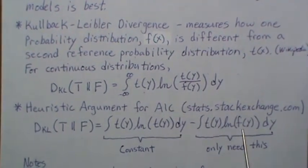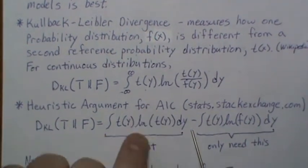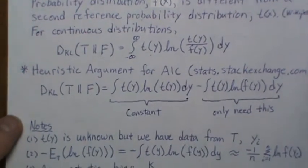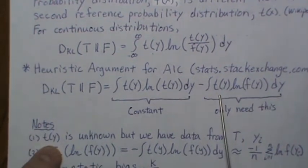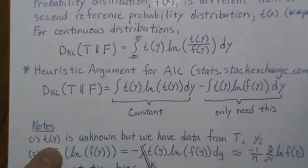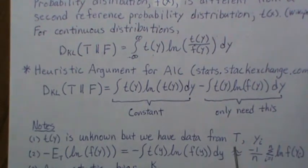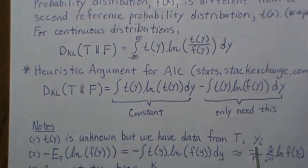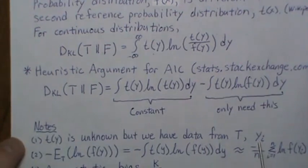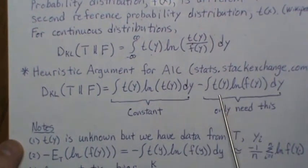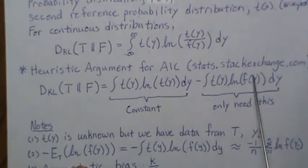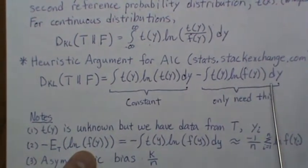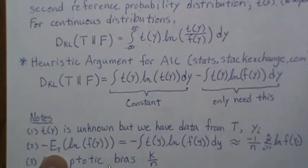We only need to look at this piece here—this is the only part that's going to change, the F for each candidate model. We can ignore this piece and only look at this piece. A few notes: the T(Y) is unknown, but we do have data from T. When we collect our data Y and regressors, the Y comes from the true model, so in a sense we have data from this piece. The F(Y) is the model that we're fitting.